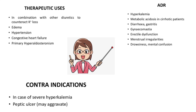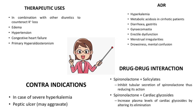On the contraindication side, potassium-sparing diuretics are contraindicated in cases of severe hyperkalemia — since one adverse reaction is already hyperkalemia, adding this drug worsens the condition. Drug-drug interaction: salicylates inhibit the tubular secretion of spironolactone, reducing its action.